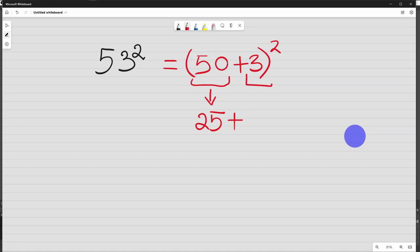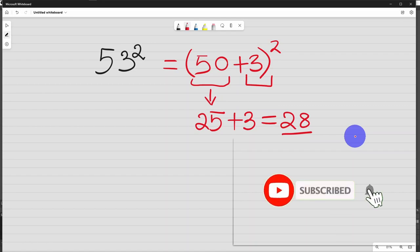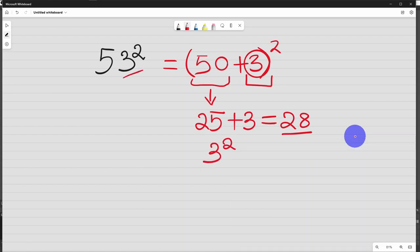Add this 3. We have 25 plus 3. This is 28. This is the first part of our answer. The second part of our answer is take the 3, and square it. 3 square is 9. Write it as 09, two digits.